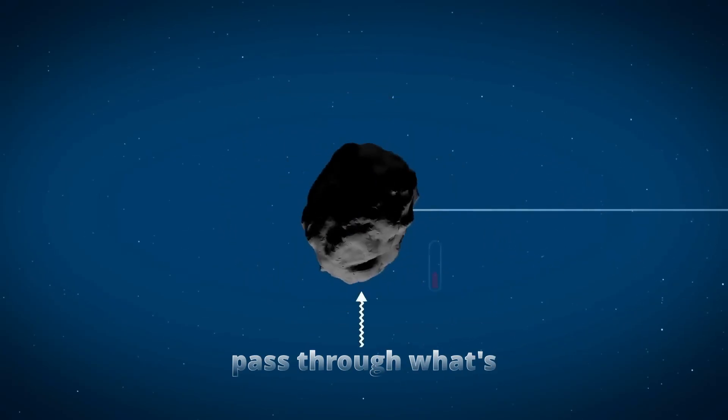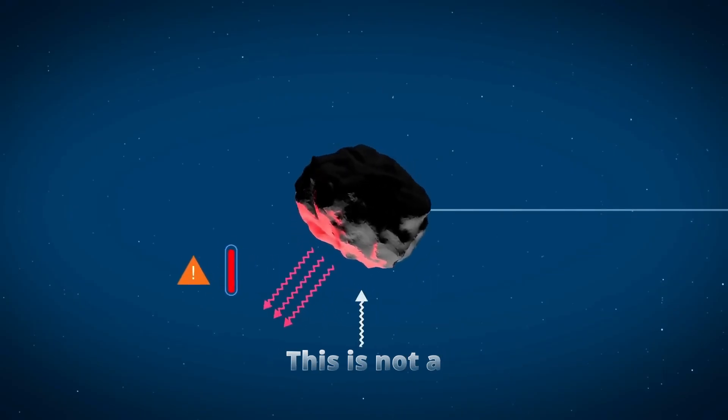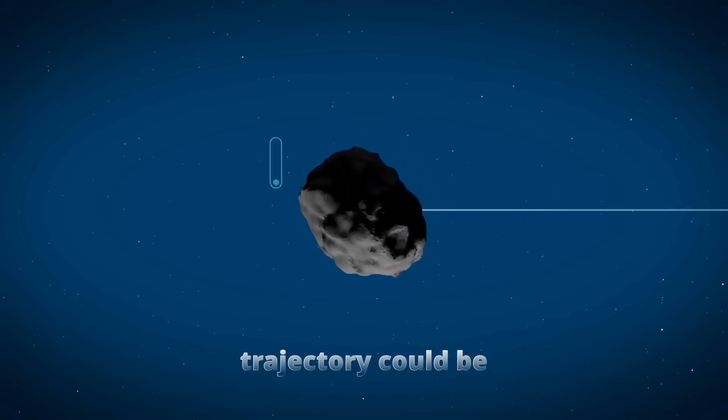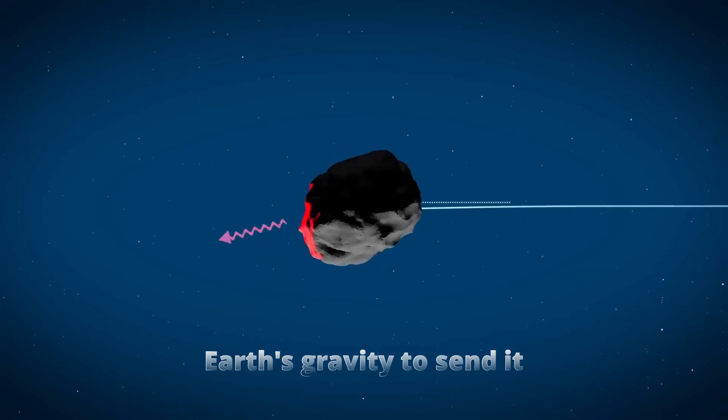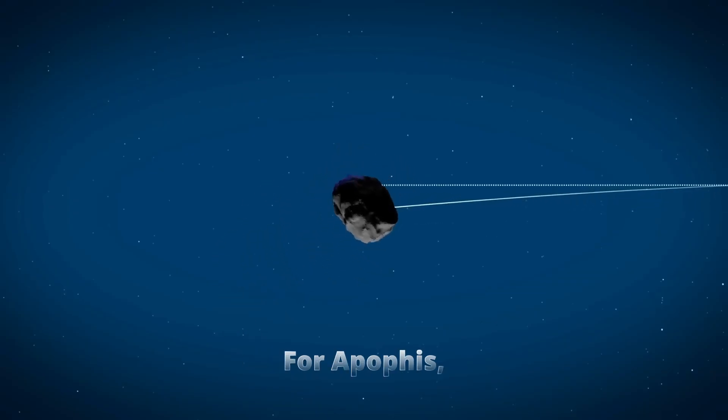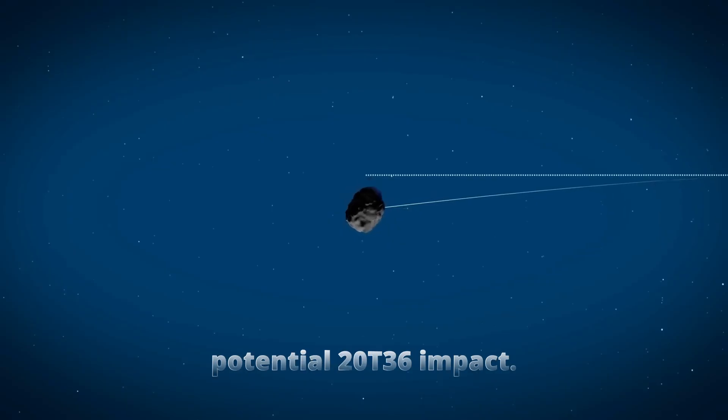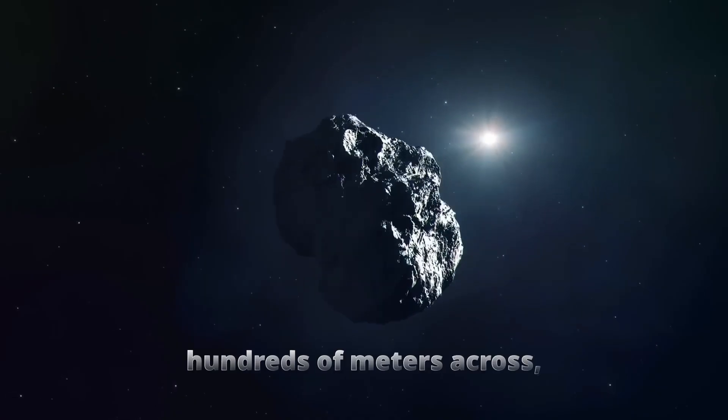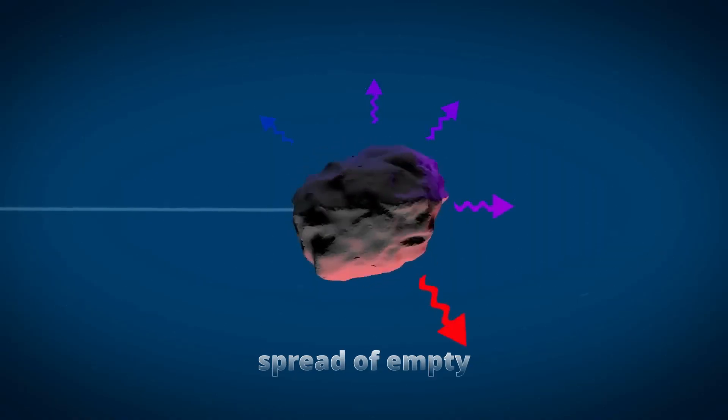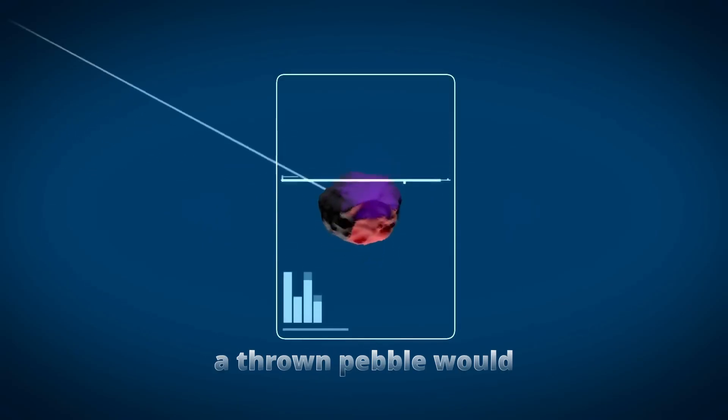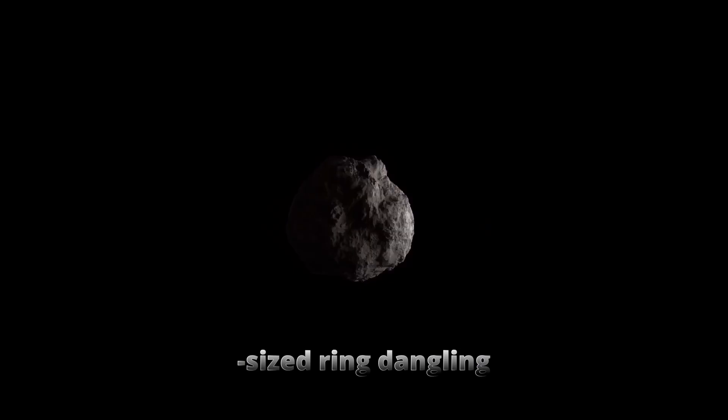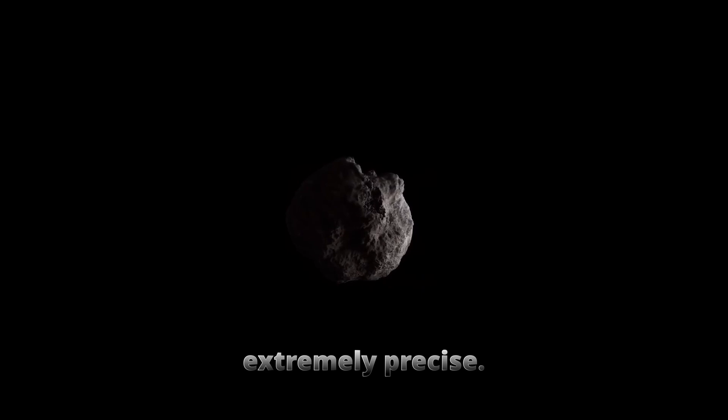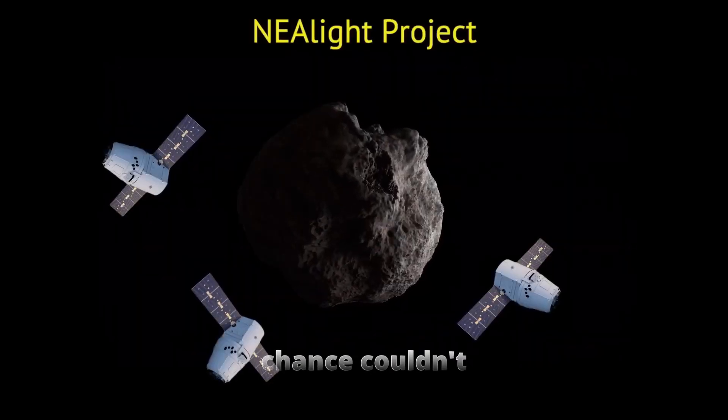This is not a physical object, but a small region of space where an asteroid's trajectory could be tweaked just enough by Earth's gravity to send it onto a collision course years later. For Apophis, the keyhole linked to a potential 2036 impact. The catch? This bullseye was only hundreds of meters across, floating in a vast spread of empty space. It was like asking if a thrown pebble would travel through a coin-sized ring dangling mid-air thousands of kilometers away. Possible, but extremely precise. Still, that slim chance couldn't be ignored.